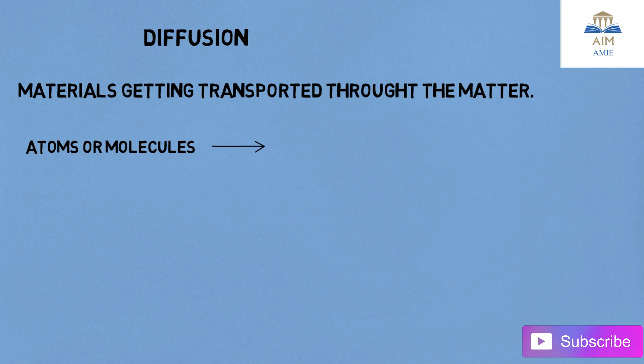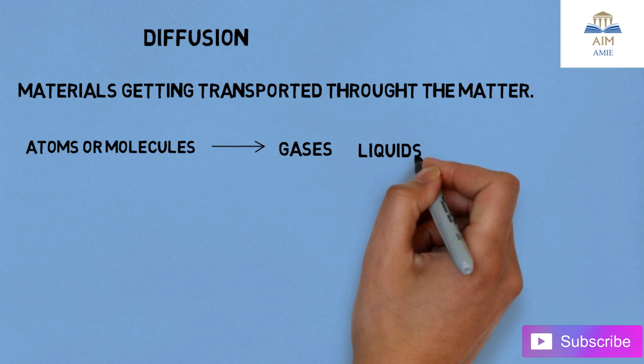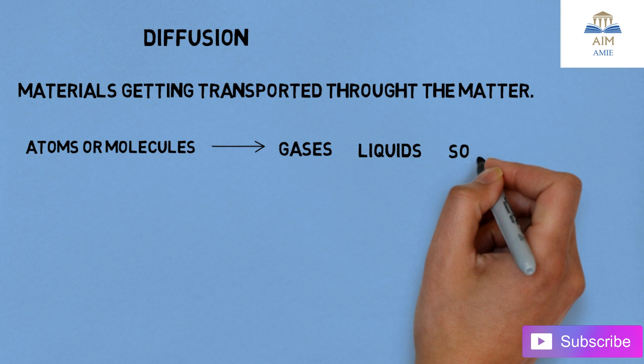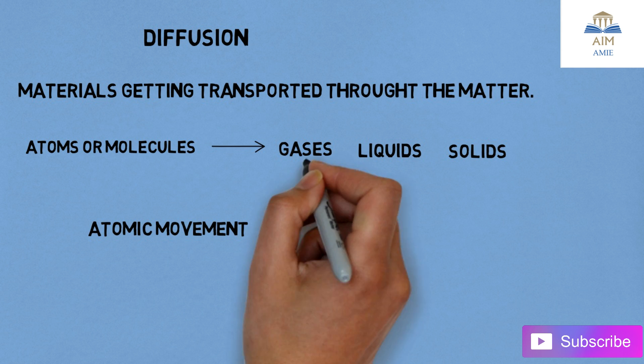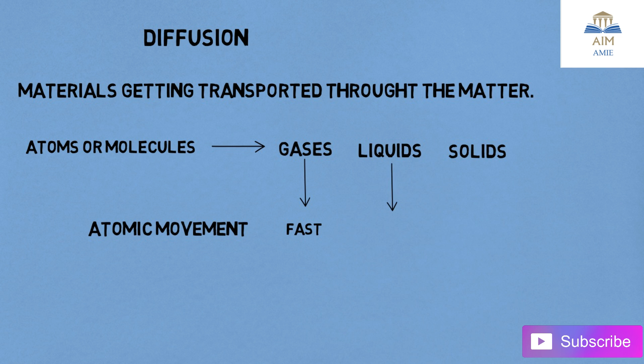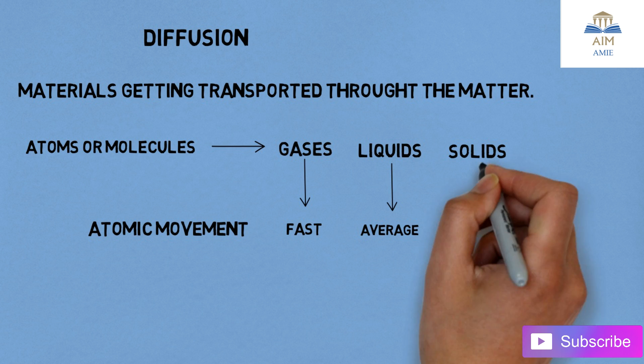The atoms or molecules in gases are very far apart, in liquids they are moderately spaced, and in solids they are closely bound to each other. Atomic movement in gases is very fast, in liquids it is moderate or average, and in solids the atomic movement is very slow as atoms are very bounded to each other.